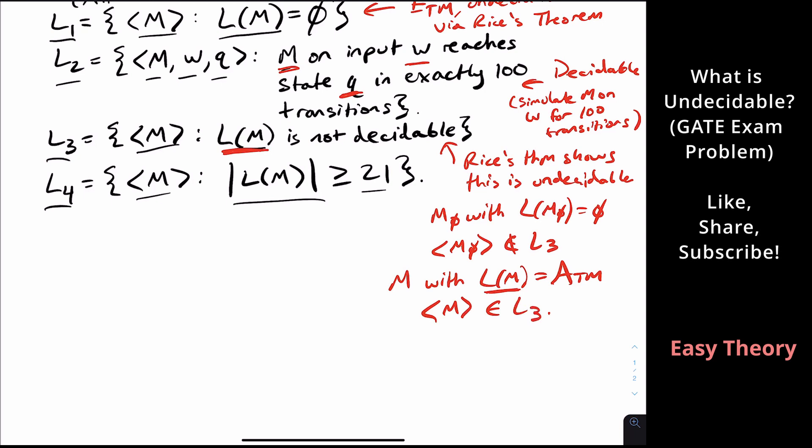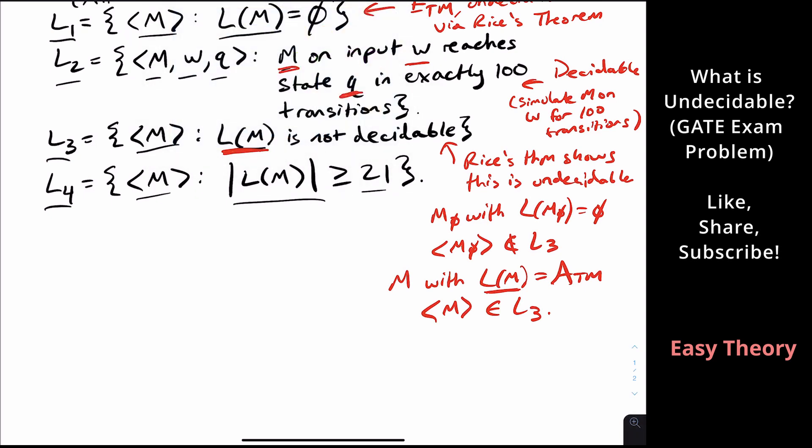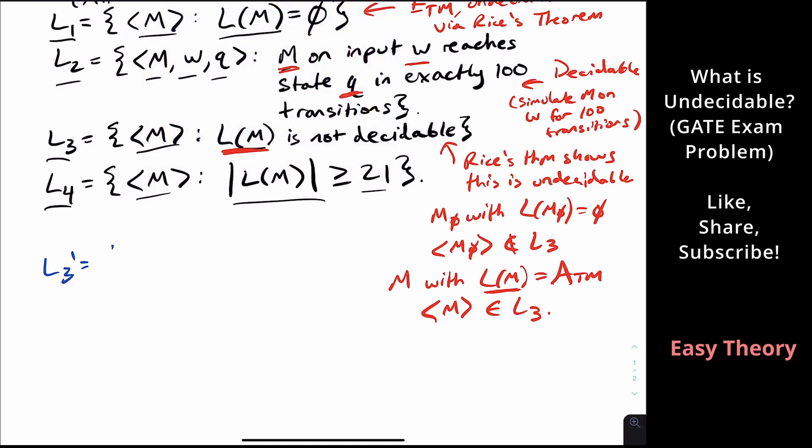And you can actually amend this. So suppose that we had L3 prime, which is a set of all machines such that L of m is not recognizable. Then this one is decidable. Why is it decidable? Well, it's a property of Turing machine languages. Yep, it's the same thing as L3 was.